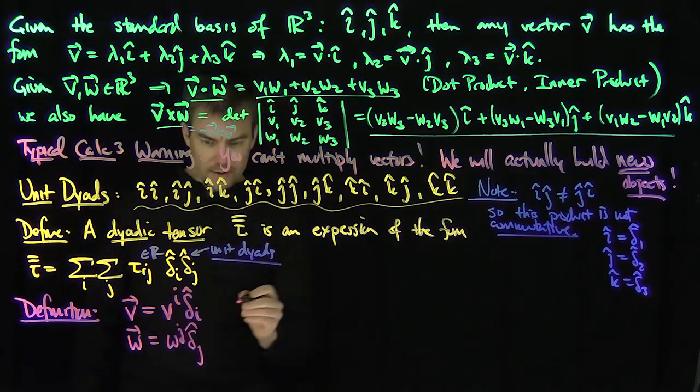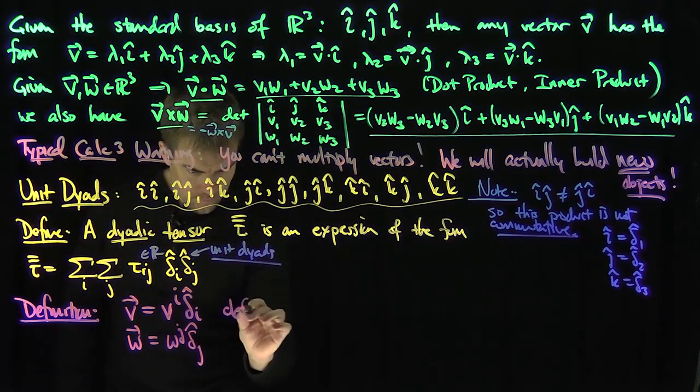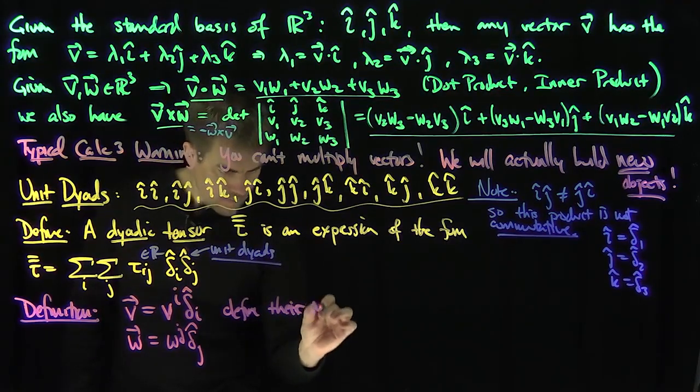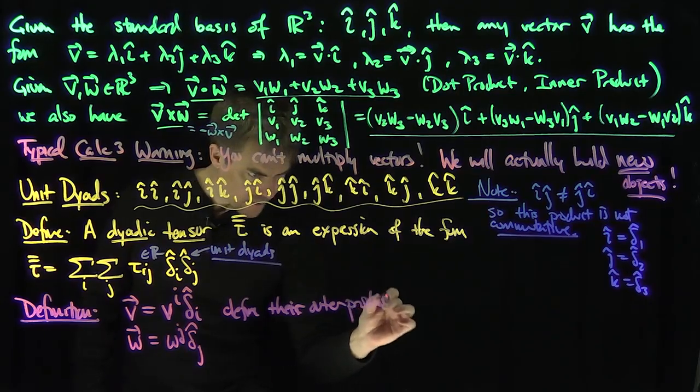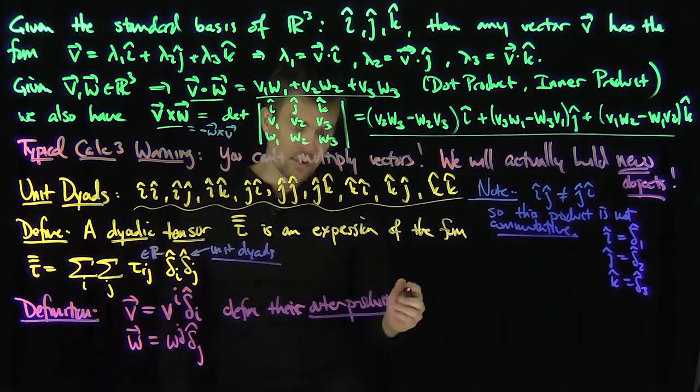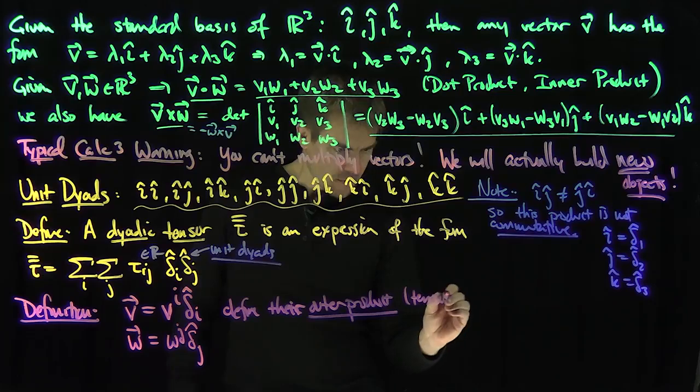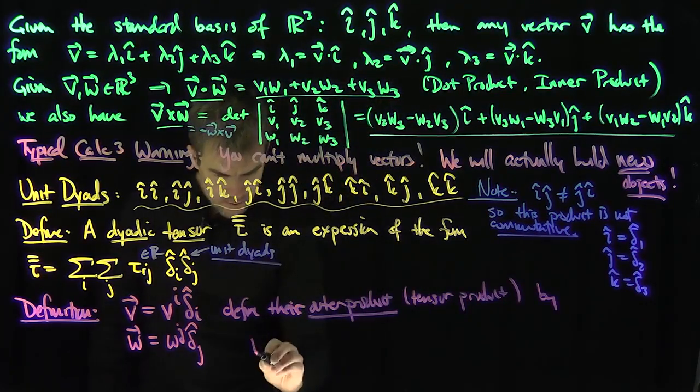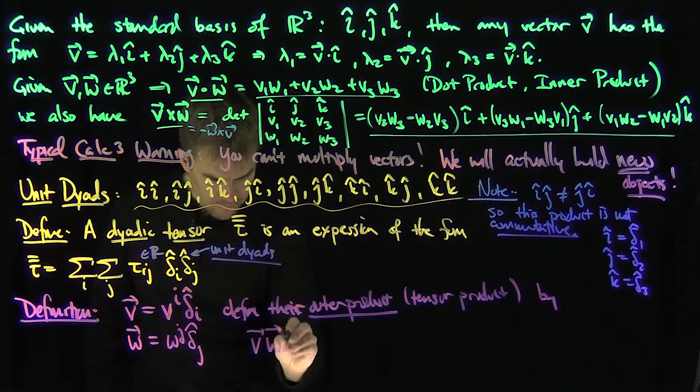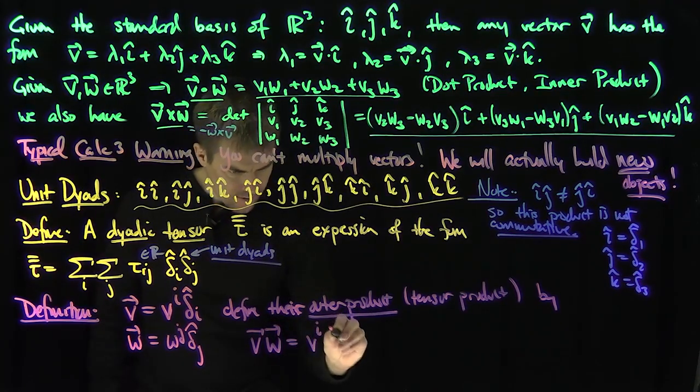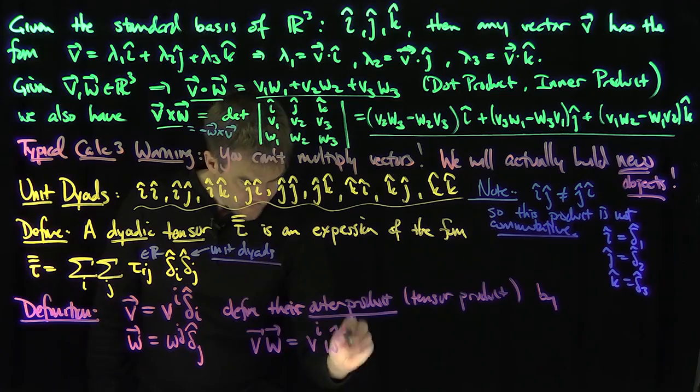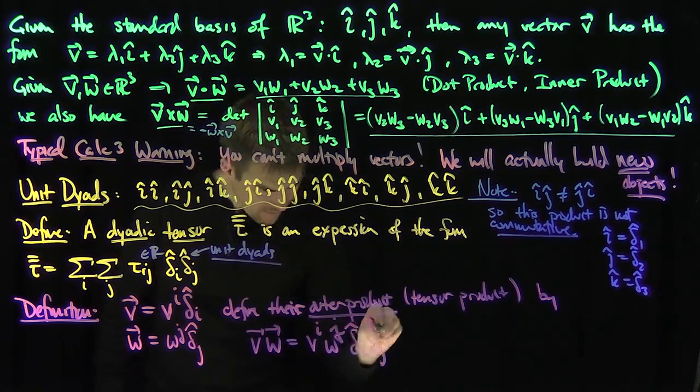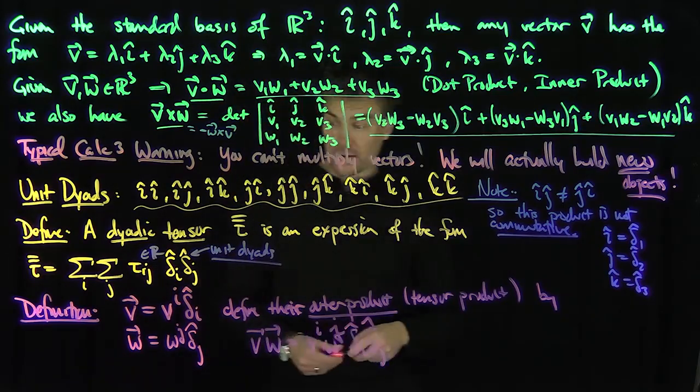Then define their outer product, not their inner product or dot product, but their outer product or tensor product, by v⊗w is going to be vⁱwʲδᵢδⱼ.